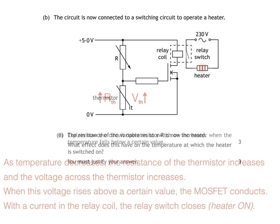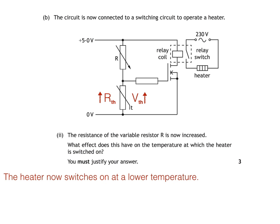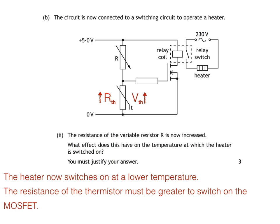B part 2 says: the resistance of the variable resistor R is now increased. What effect does this have on the temperature at which the heater is switched on? If the resistance of the variable resistor increases, the voltage across it will also increase. This means the voltage across the thermistor will decrease and the MOSFET will no longer conduct. To make the MOSFET conduct again, we need to increase the voltage across the thermistor by increasing the thermistor's resistance, which means reducing the temperature. So the heater now switches on at a lower temperature, and the resistance of the thermistor must be greater to switch on the MOSFET.